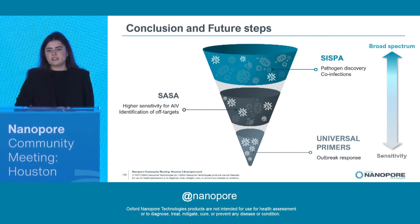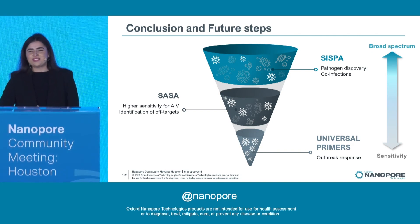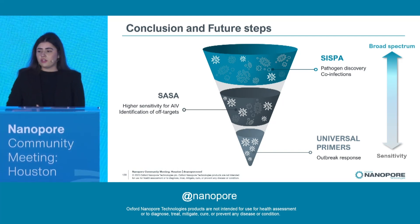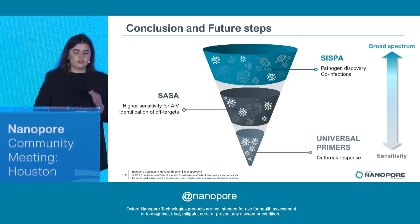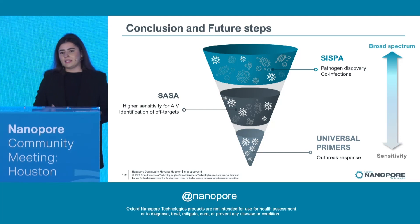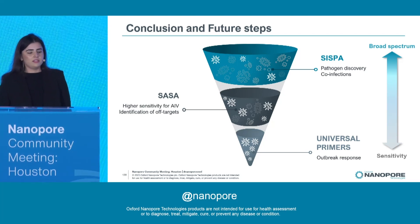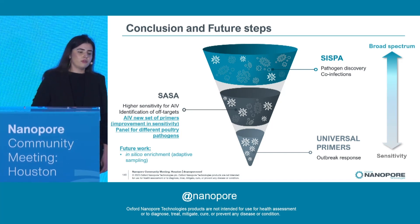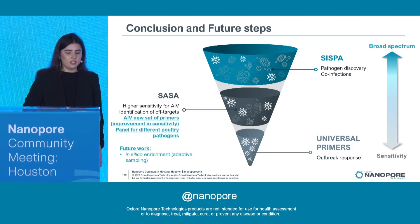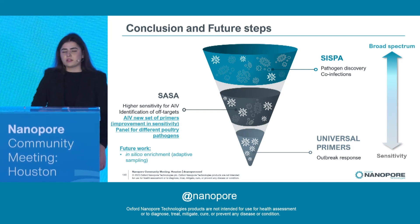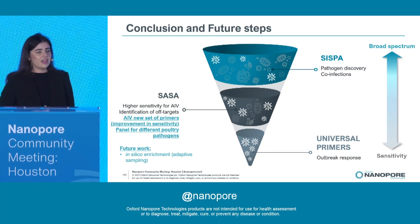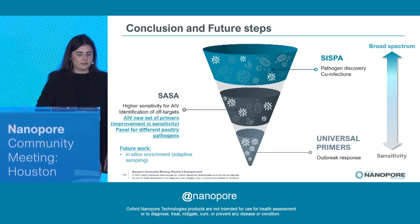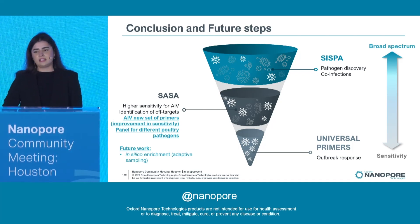In summary, those different enrichments perform differently. With SISPA, we amplified everything — it's a random process, not targeting anything specific. With universal primers, we focused on a targeted enrichment of influenza. And with SASA, we combined both: higher sensitivity for influenza as well as the identification of off-targets. Our future work with SASA will focus on the design of a new set of primers for influenza from a more representative database, as well as the creation of a panel for different poultry pathogens — having one test for multiple diseases. In addition to the wet lab enrichment, we aim to apply in-silico enrichment using adaptive sampling.